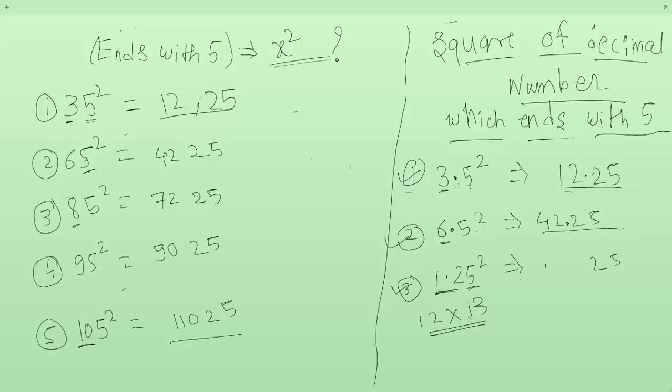How will you multiply 12 with 13? First, what is the square of 12? That is 12 into 12 is 144. And then add one more 12 with 144. So you will get 156.